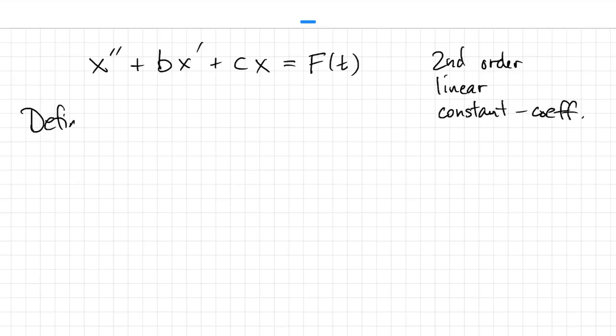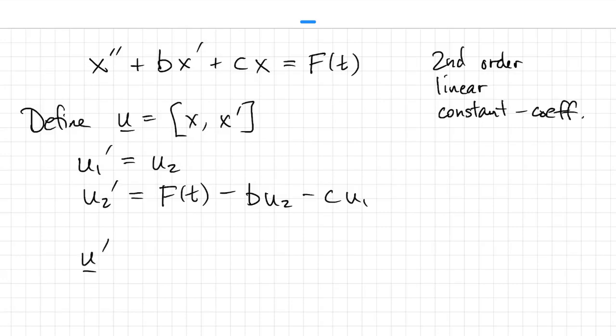If we do our conversion, the components of u are x and x prime. u1 prime is x prime, that's u2. u2 prime is x double prime, which we get from the ODE. So that's f of t minus b times x prime, but we called that u2, minus c times x. We called that u1. And this is a linear system of equations in u. So we can write it in matrix form. We have this matrix, it's called a companion matrix, times u, and then we have a forcing function.